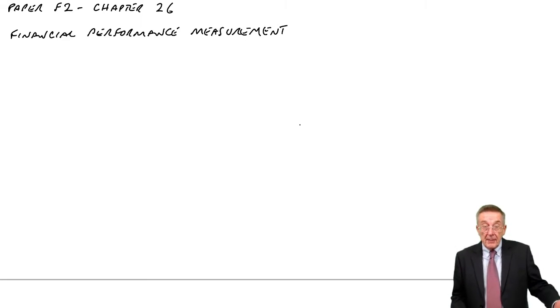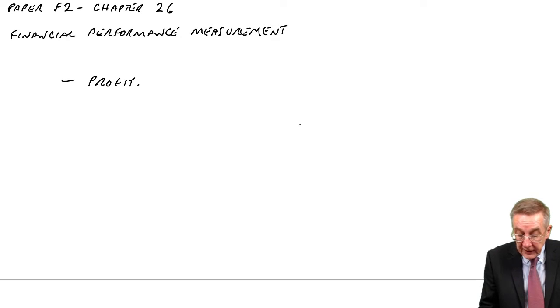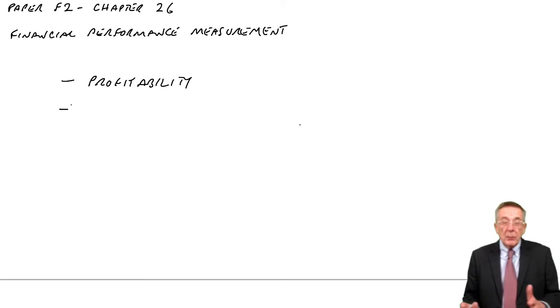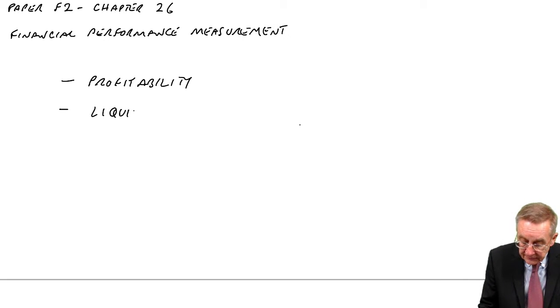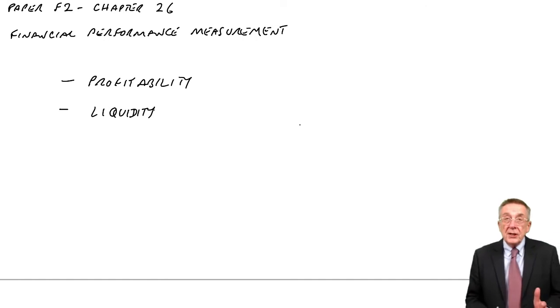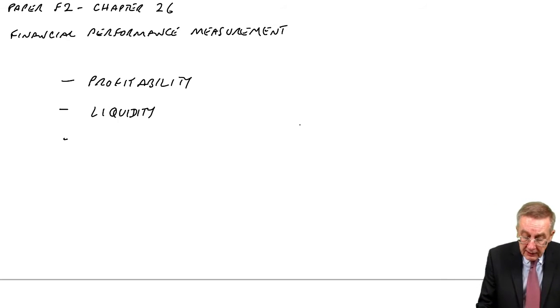The main areas, as I mentioned on the previous page, which I'll obviously explain one by one as we go through, are profitability - clearly we want to know if the company is making more or less profit. Liquidity, which is looking to see can the company pay its bills, has it got enough cash? And gearing or risk, as I'll explain when we come to it.